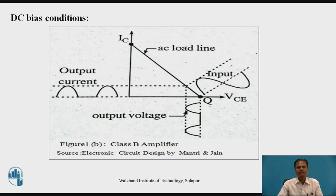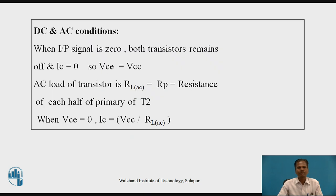This figure shows the AC load line for Class B Power Amplifiers. Output current and output voltage vary for only half a cycle of the input AC voltage signal for each transistor. Output collector current varies from 0 to its peak value in the positive direction, and collector-to-emitter voltage also varies from the quiescent point value to maximum positive or negative voltage. When the input signal is 0, both transistors remain off, so collector current IC equals 0 and collector-to-emitter voltage equals the biasing voltage VCC.